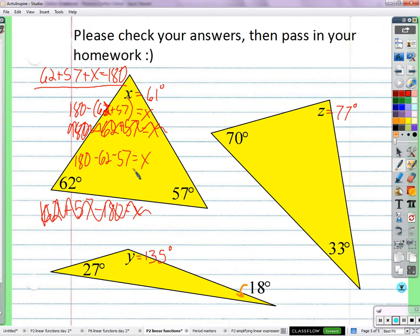Can you convert all of us? 180 minus 62, which would be 118. And then you would do minus 57, which would equal 61. So whether we add them up first and then subtract, or subtract them one at a time, it's the same thing.